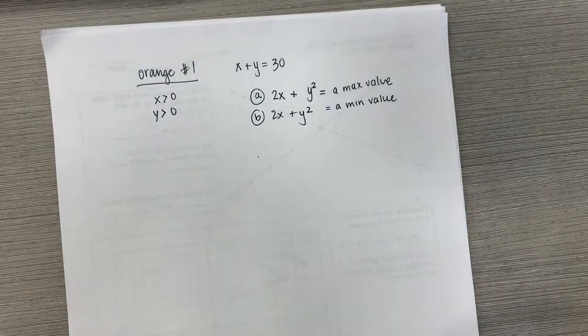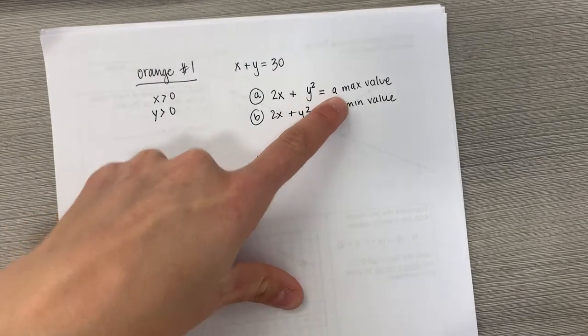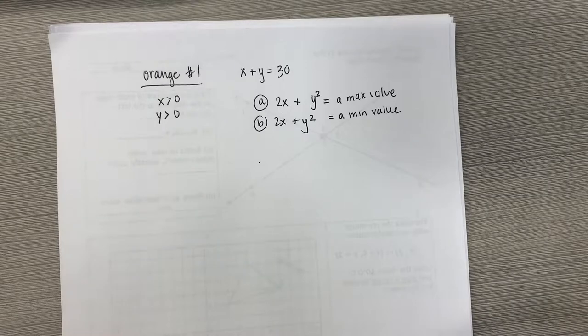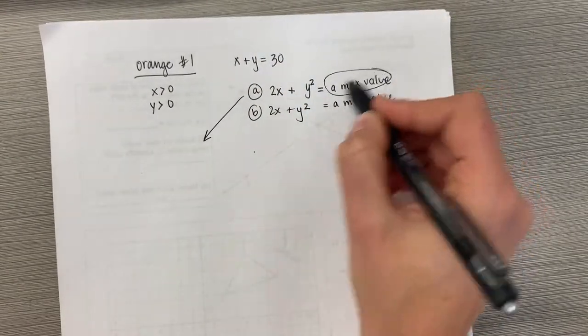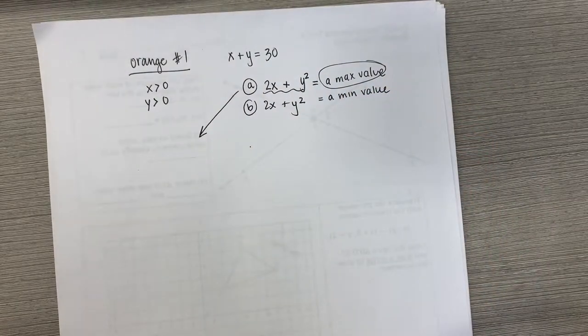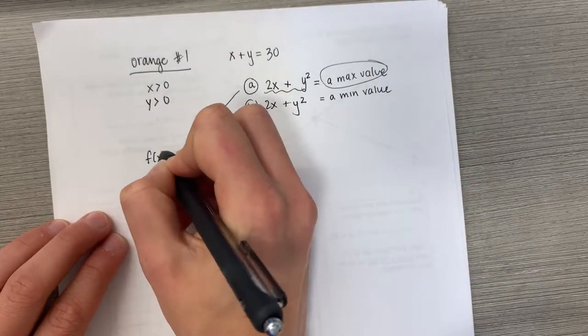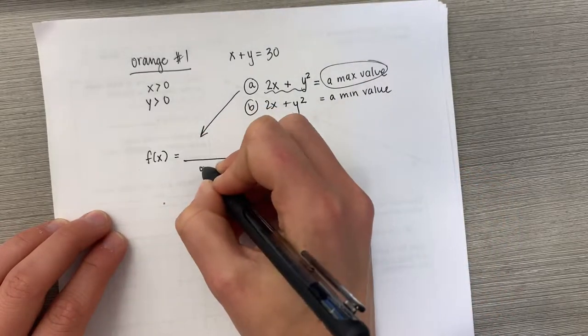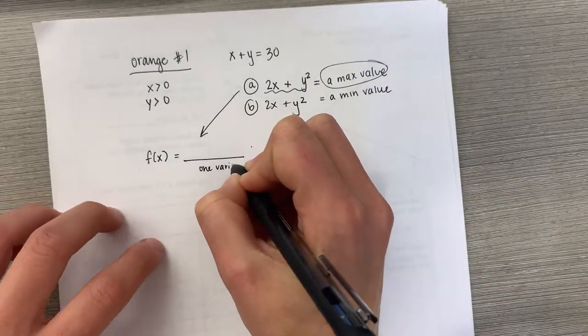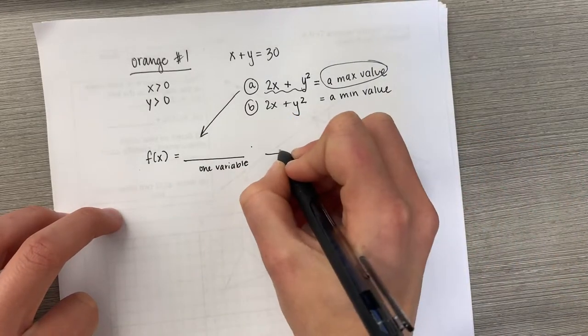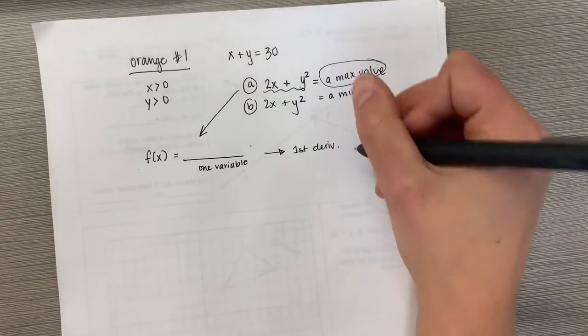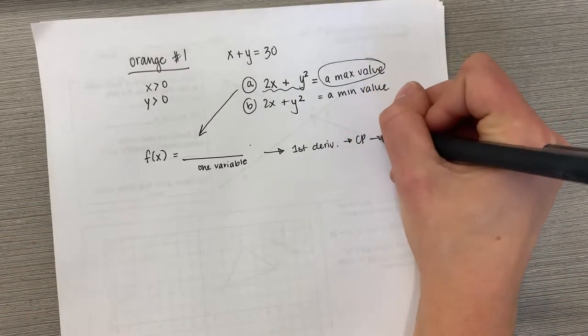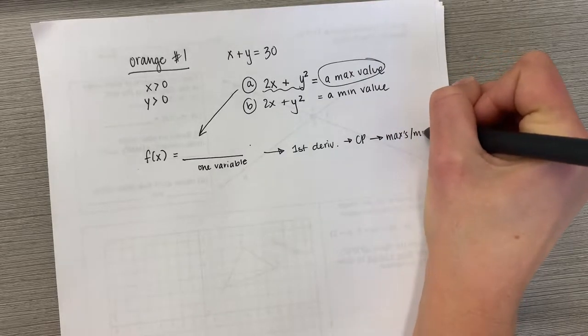Now you might be thinking to yourself, what the heck? We don't have any information about what max value is supposed to be. And that I actually want to say is, well, what if we had this as f of x equals something, all in terms of one variable? Then we could use the first derivative to figure out critical points and maxes and mins.